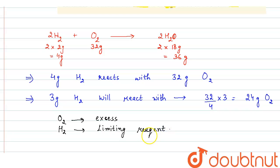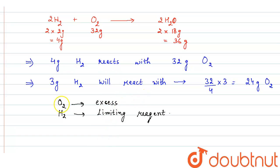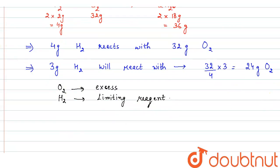So from here we can say that H2 is the limiting reagent, because all the amount of H2, that is 3 gram, will be used in the reaction and oxygen will remain unreacted because oxygen is given more than required. So H2 is the limiting reagent. So we will calculate the amount of water formed using H2.